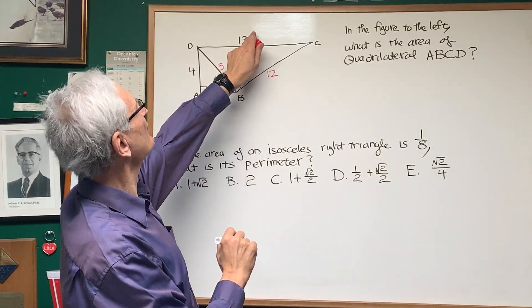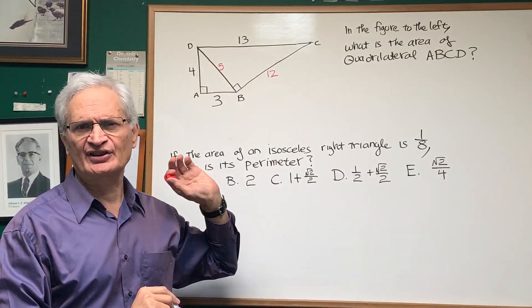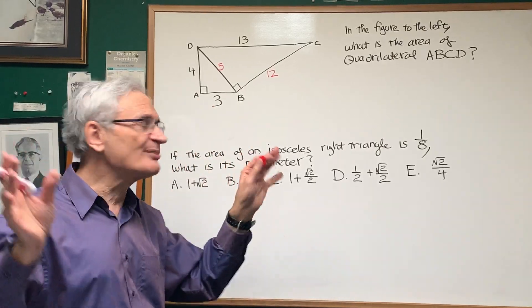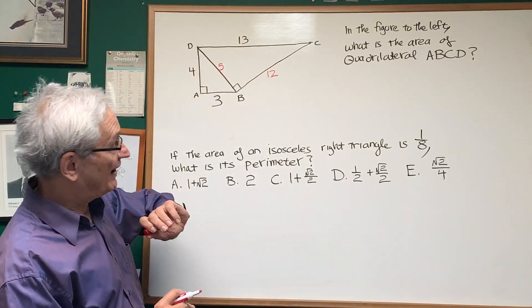And you can verify that by the Pythagorean theorem. Five squared plus twelve squared equals thirteen squared. 25 plus 144 is 169. And you can just check that out. But it's good if you just store somewhere in your memory the three, four, five triangle and the five, twelve, thirteen triangle.